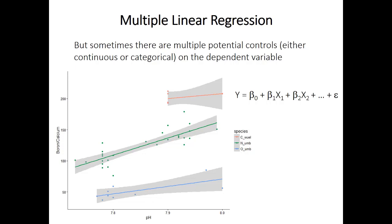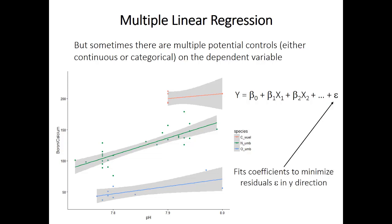Interestingly, linear regression, ANOVA, and t-tests are all special cases of a more generic method called general linear models. Multiple regression works in much the same way as simple linear regression — model coefficients are fit by minimizing the sum of squared residuals. Instead of one slope coefficient, there are now multiple regression coefficients, which can be a bit harder to interpret.